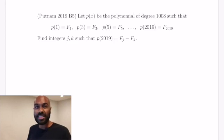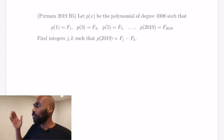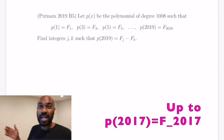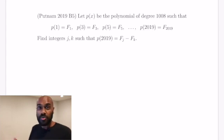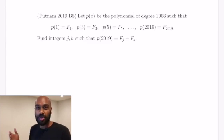In today's video we're going to look at an interesting problem where we have a polynomial where at the first 1,009 odd positive integers the polynomial's value is the Fibonacci number indexed by that integer, and we're asked what the polynomial evaluated at 2019 is. It turns out that's a difference of two Fibonacci numbers, and we're going to see why using Lagrange interpolation. Stay tuned.